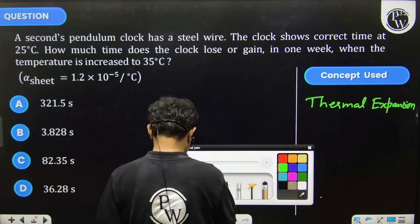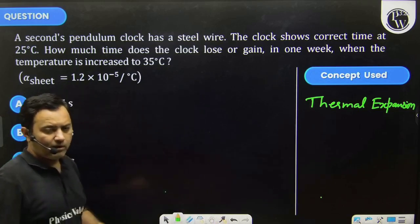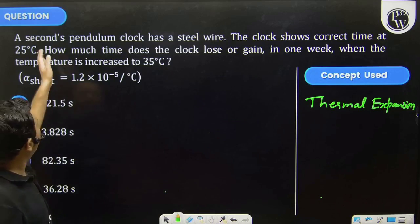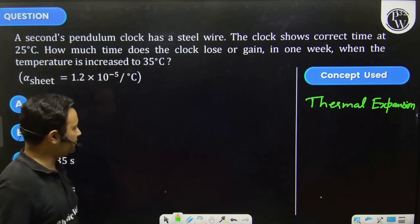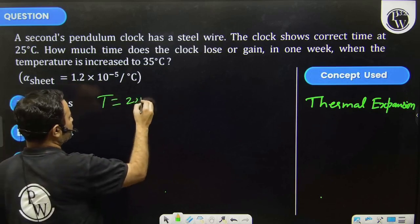Due to thermal expansion, length of the pendulum clock increases. We know that time period of a pendulum clock is T = 2π√(L/g).